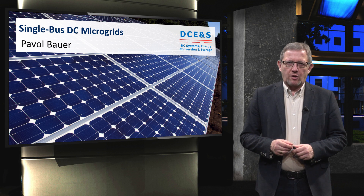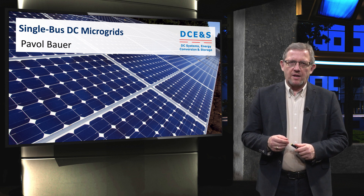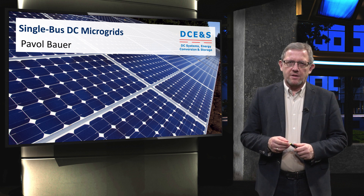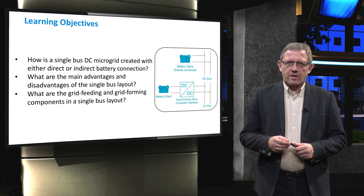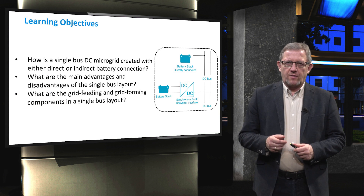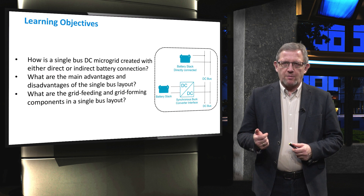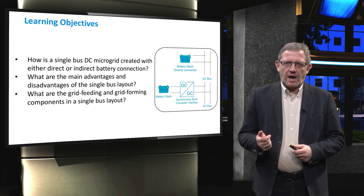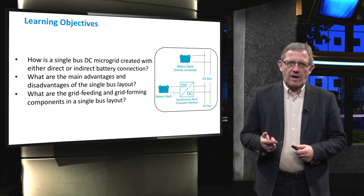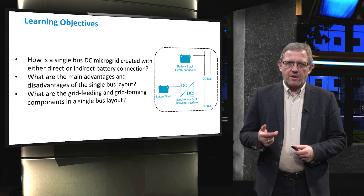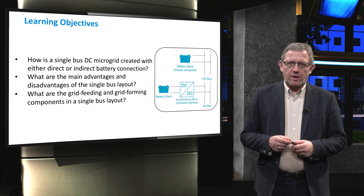After introducing three types of DC connections in the previous video, today we introduce in detail the layout of a single bus DC microgrid. The main learning objectives fall on three main questions: first, how a single bus DC microgrid is created with either direct or indirect battery connection; second, what are the main advantages and disadvantages of the single bus layout; and third, what are the grid feeding and grid forming components in a single bus layout.